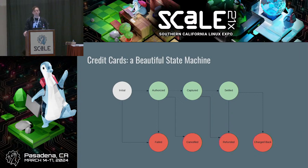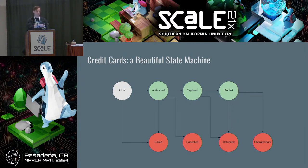Q: For different point-of-sale systems, if they're all processing credit cards, do they go through the same function? A: Yes, a point-of-sale system is going to go through the same thing. Next time you tap or swipe your card, look at the terminal — it'll often say 'authorizing,' and then it'll say 'captured' at the end. You can actually see this happen. Most terminals will tell you what's going on.